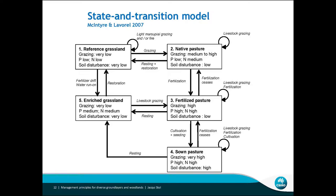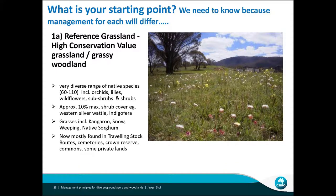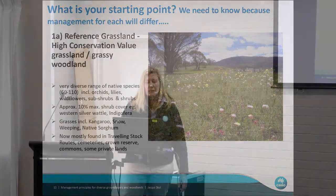We'll go through these bit by bit to look at your starting point, because you do need to know what you've got before you can manage it. Do you have a really high diversity? These are reference high conservation value grasslands — really high in orchids, lilies, etc. They're pretty rare these days. Now they're mostly found in travelling stock routes, cemeteries, crown reserves, and some private land. I was on a property in Yass last week — 80 hectares of beautiful high conservation value grassland.